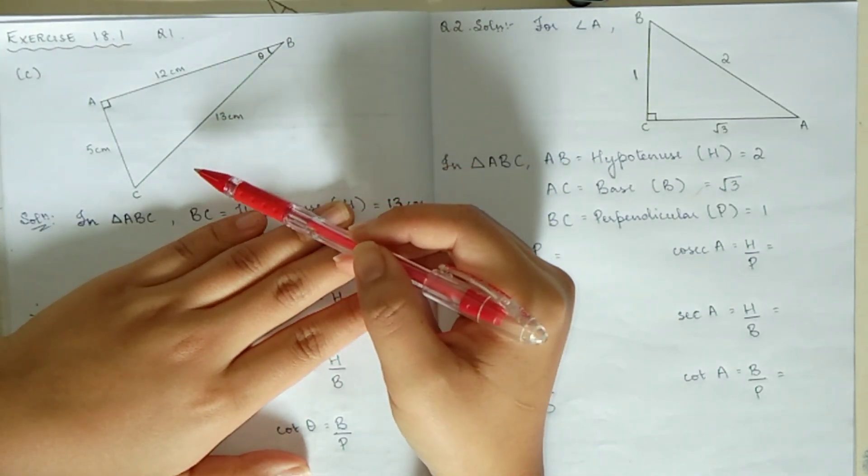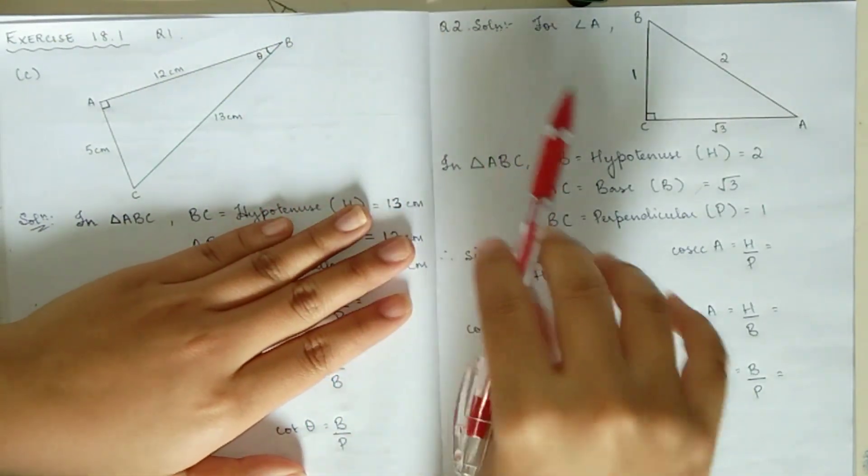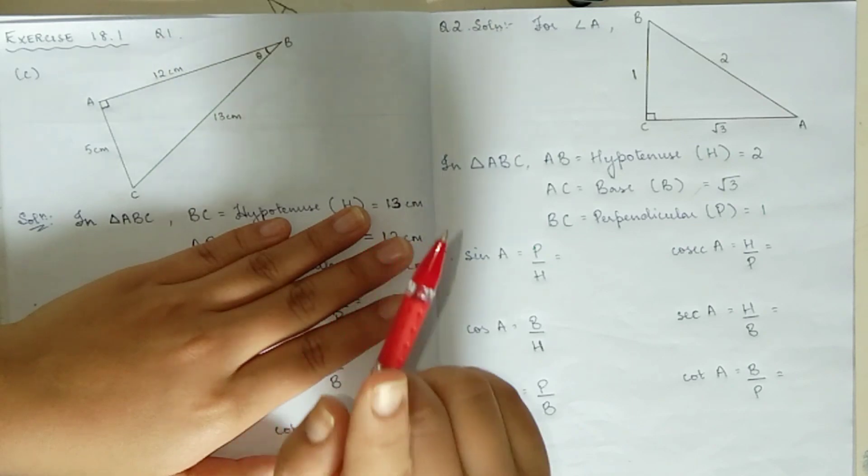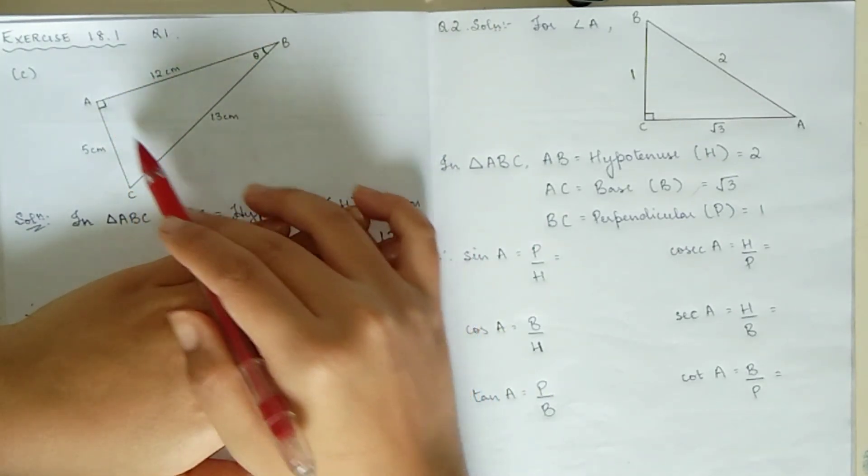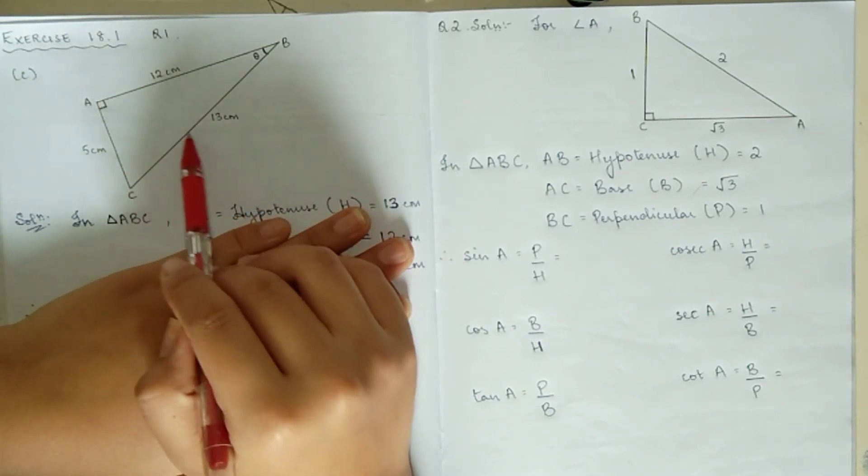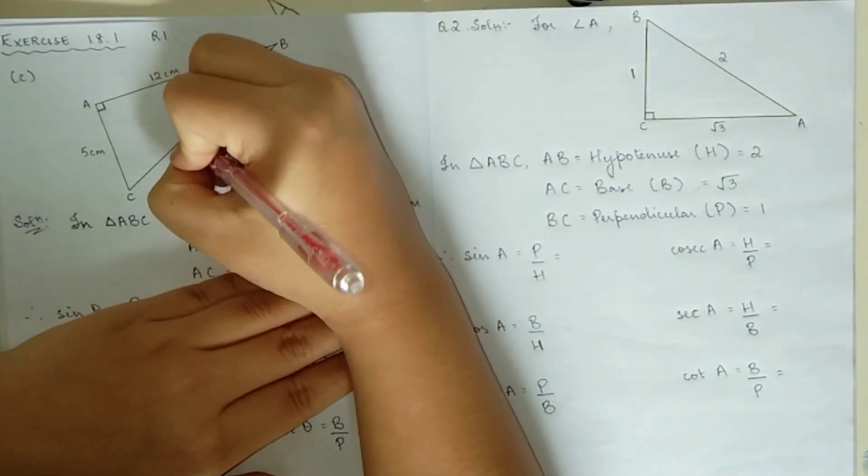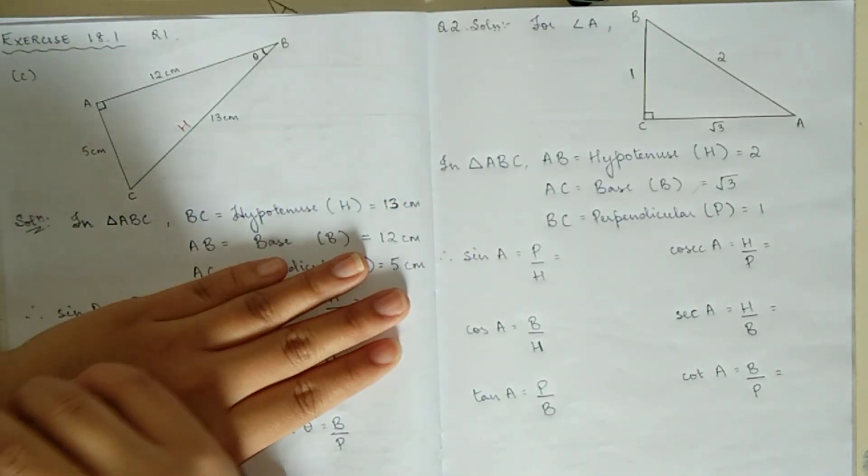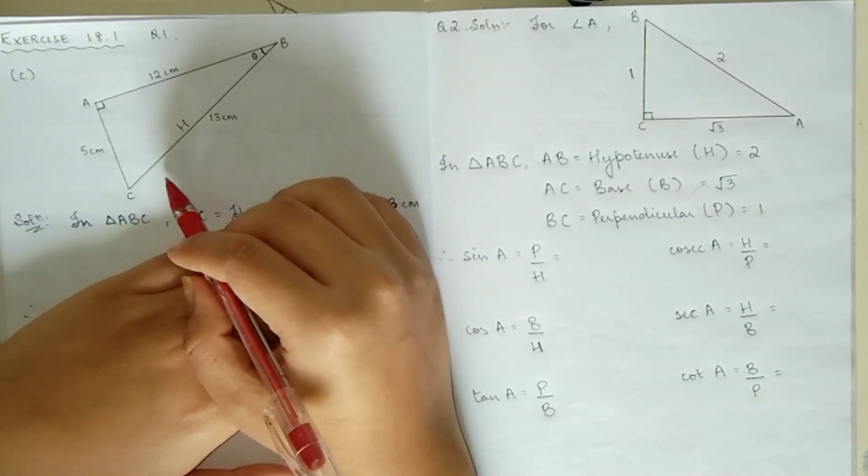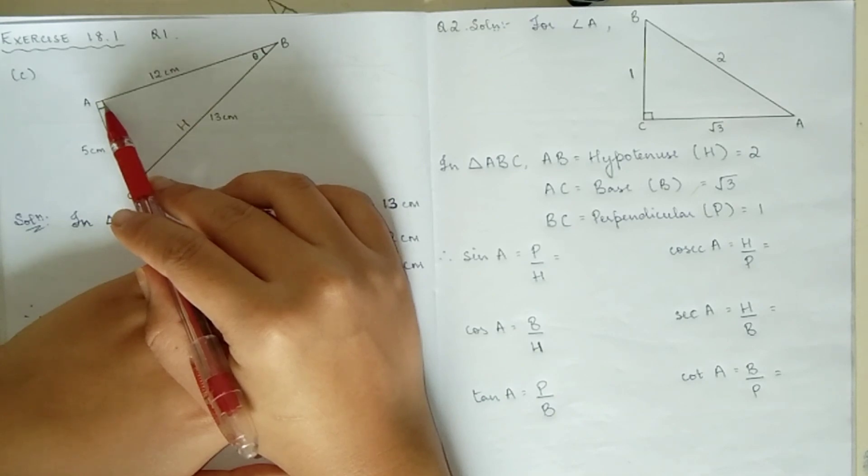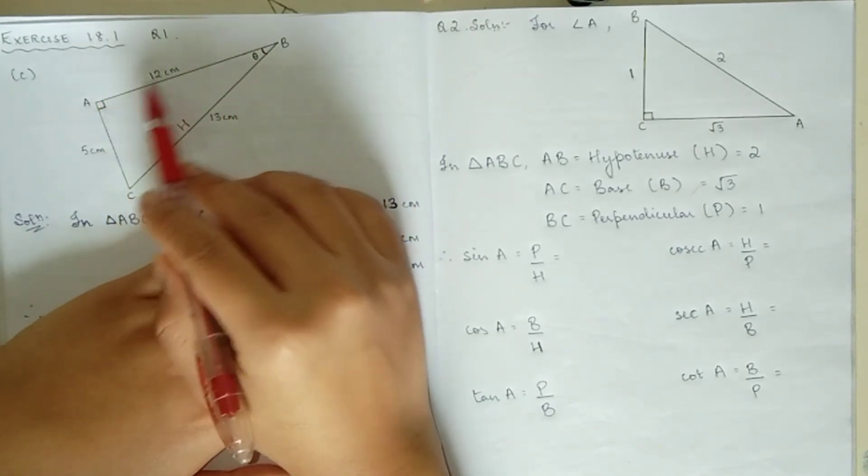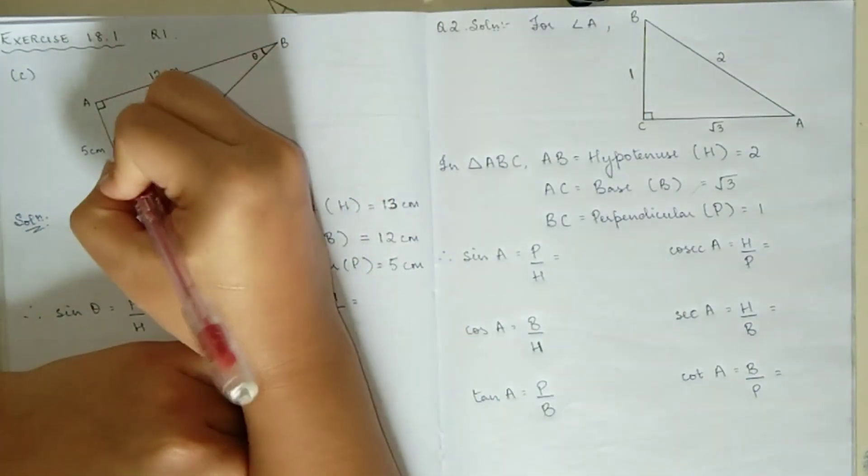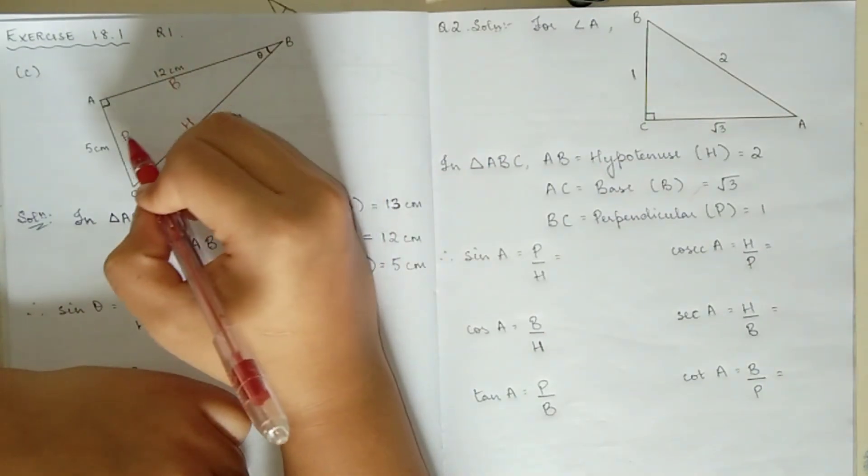Now, hypotenuse has two definitions: it's the longest side, and it's opposite to the 90 degree angle. The side opposite to 90 degrees is the hypotenuse, H for short. Now for base, the 90 degree angle and the angle we're working with make two sides: the base B, and the other side is the perpendicular P.